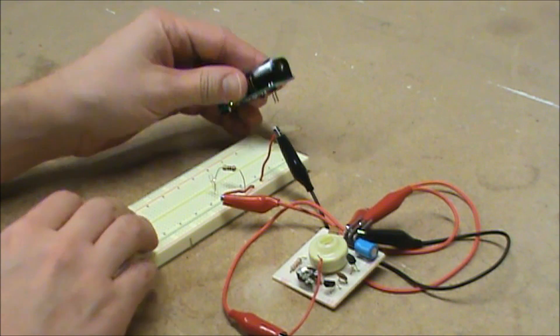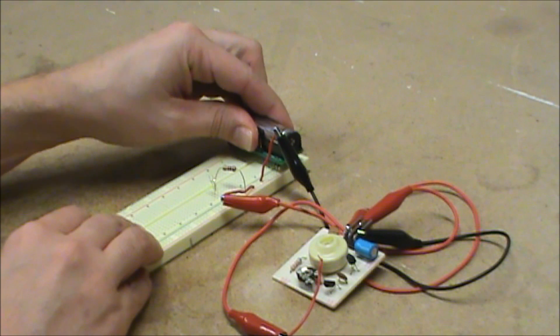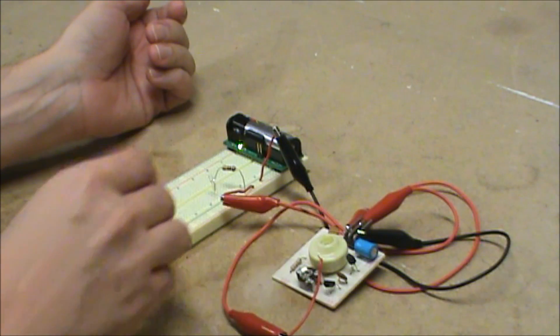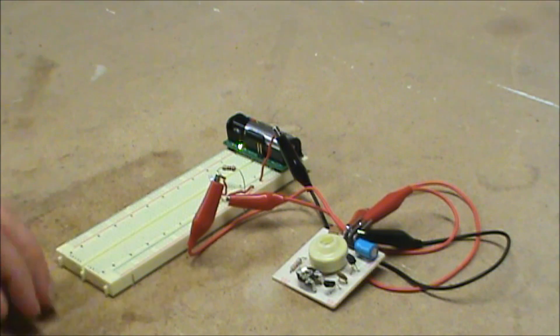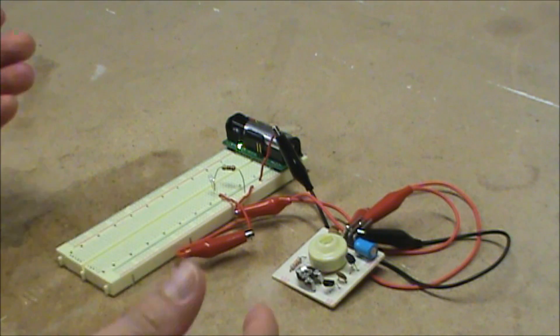You can plug it right into your solderless breadboard rails, and then you can use that voltage running down the rails to power a circuit that needs more voltage. For example, this circuit needs 5 volts. That's what it's powering.